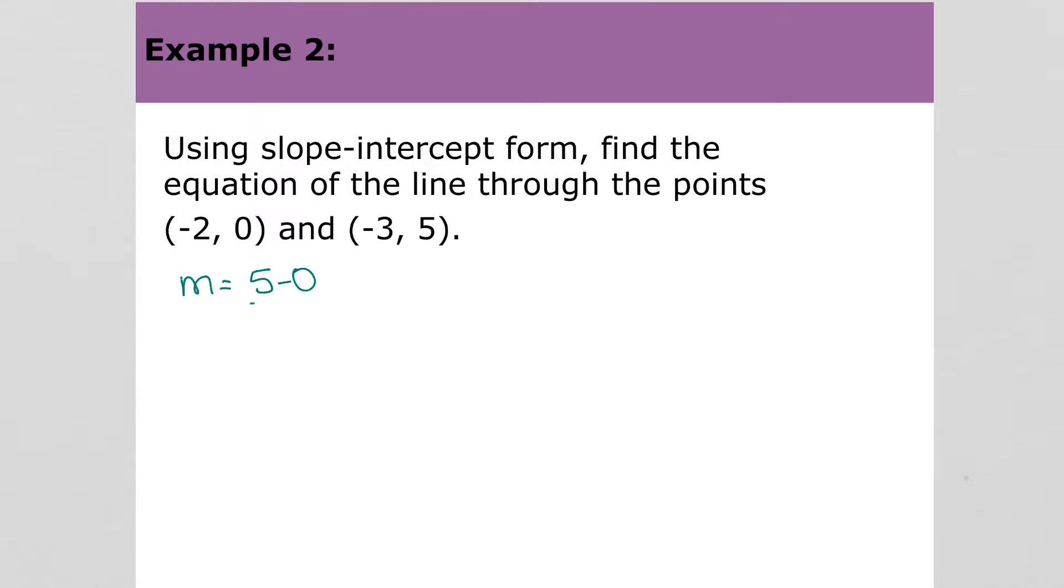5 minus 0 over negative 3 minus negative 2. Negative 3 minus negative 2, that's negative 3 plus 2, which is negative 1. So the slope is negative 5.